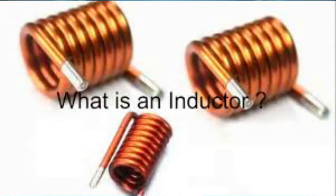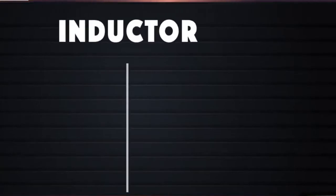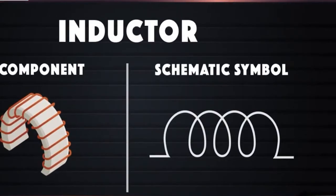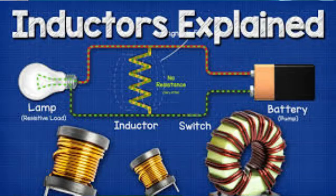The inductor, also called a coil, choke, or reactor, is a passive two-terminal electrical component that temporarily stores energy in a magnetic field when electric current flows through it.